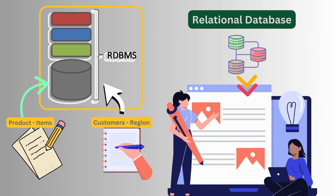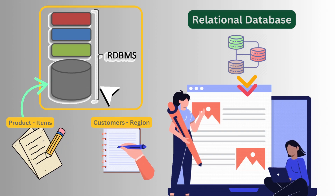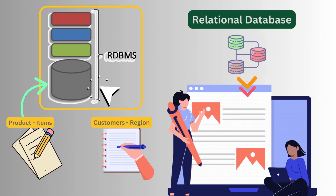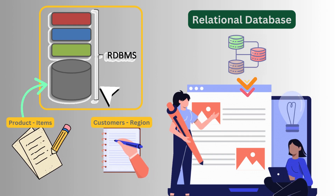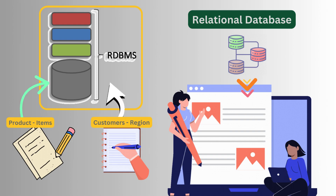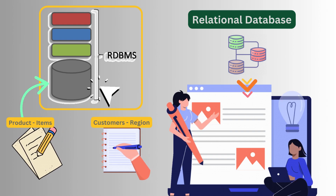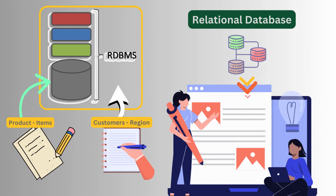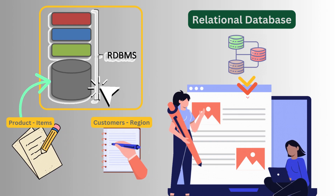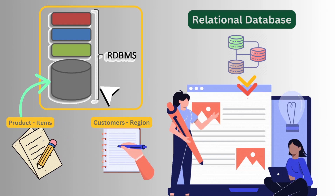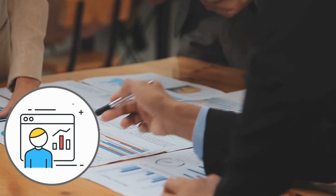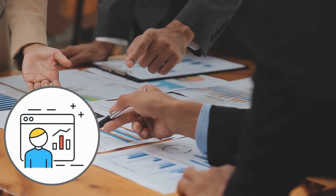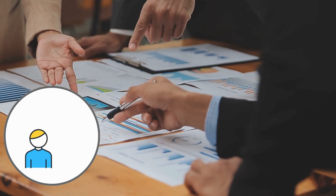As we know, the relationship between two or more tables in SQL Server is the basic concept of any relational database. For an example, a family always starts with a parent and children relationship. Same as a database always starts with a product-item or customer-regions relationship. We will try to understand how we can differentiate a relationship between two or more data tables in a database.